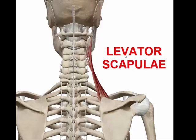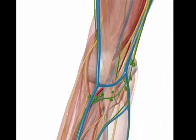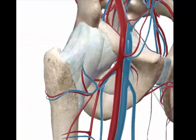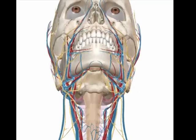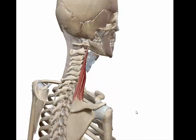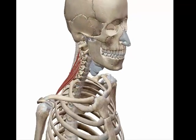Hi, I'm Atta from Easy Anatomy. In this video we are going to talk about the levator scapulae muscles. The levator scapulae is the posterior muscle of the thorax. It is situated at the back and side of the neck and acts on the pectoral girdle.